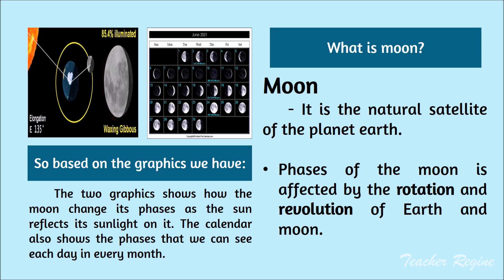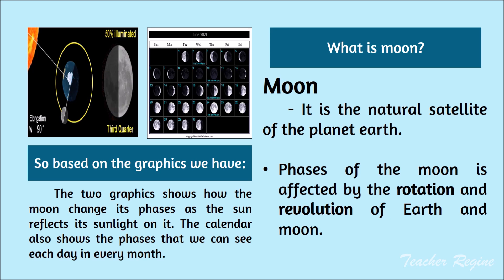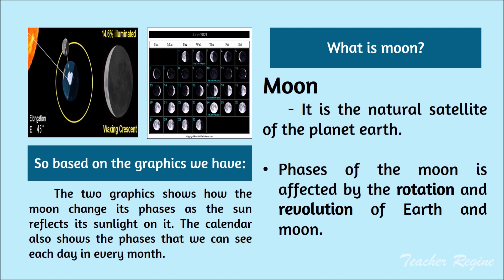What is the moon? The moon is the natural satellite of the planet Earth. The phases of the moon are affected by the rotation and revolution of the Earth and moon.